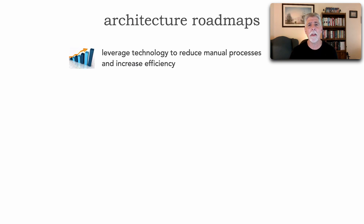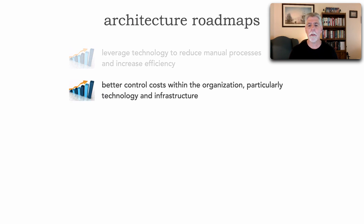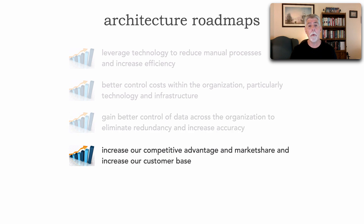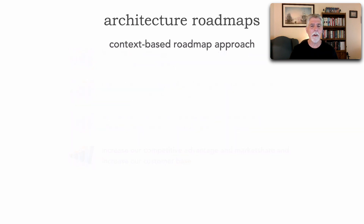Some examples of initiatives for which we would create a roadmap in enterprise architecture include: leveraging technology to reduce manual processes and increase efficiency; better controlling costs across the organization, particularly with technology and infrastructure; gaining better control of data across the organization to eliminate redundancy and increase accuracy; and increasing competitive advantage, market share, and customer base — each of which involves some sort of transformation across the enterprise.